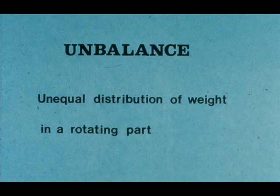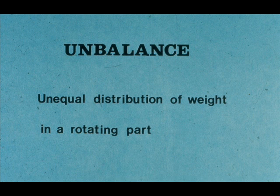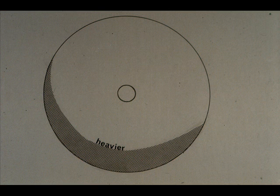First of all, what do we mean by unbalance? Unbalance is the unequal distribution of weight in a rotating part. This graphic illustration shows that one side of the flywheel is heavier than the opposite side, resulting in an unequal distribution of weight around the center of the wheel.